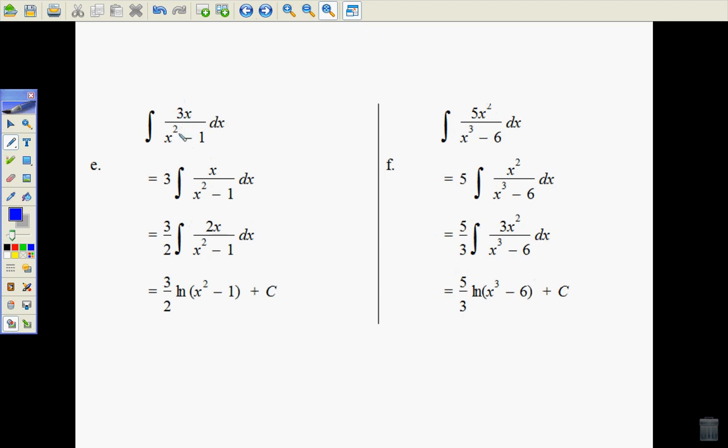3x, a little bit different with this one, because what I want really is 2x up top. So I can bring my 3 out the front, and then multiply it by 2 and a half. So it gives us the 3 on 2 out the front, because 1 and a half times 2 is 3. So that's where we're able to get that. And so we integrate 2x on x squared minus 1, gives us natural log of x squared minus 1.